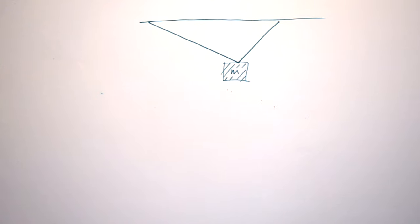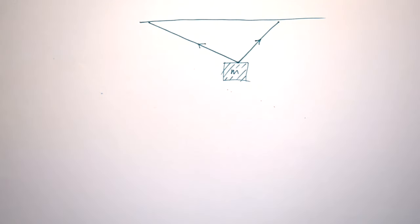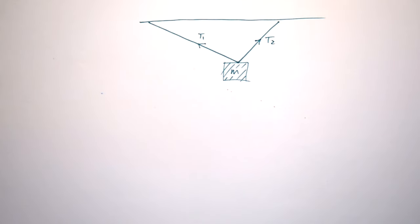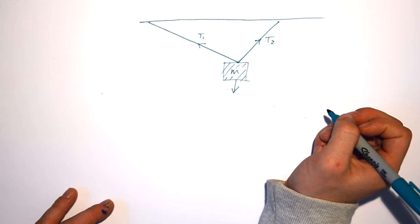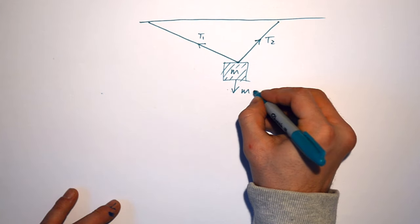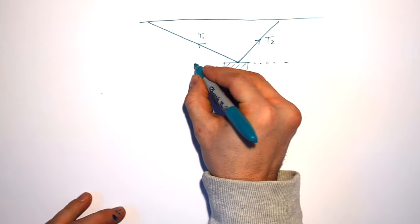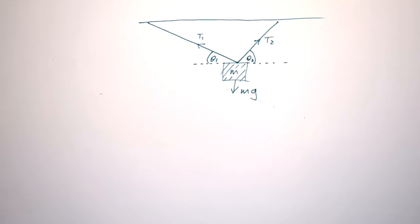What about a mass hanging in the air, suspended by two cables? The force keeping the mass up is the tension in the cables — I'll call those T1 and T2. What are those tensions balancing? They're balancing the force due to gravity, which is the weight of the mass: mg — mass times g, the acceleration due to gravity or gravitational field strength.